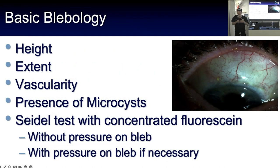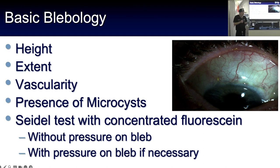Some of us in glaucoma joke that we are nothing more than blebologists — we study blebs, manage blebs, and worry about blebs in our patients. Basic blebology means we want to look at the height, extent, and vascularity of the bleb, whether there are microcysts in the conjunctiva, and we'll often use a Seidel test to look for leaks that might otherwise be missed, since a leak can sometimes be very subtle.